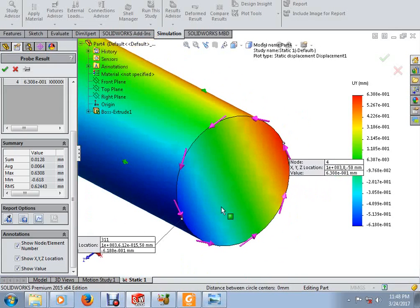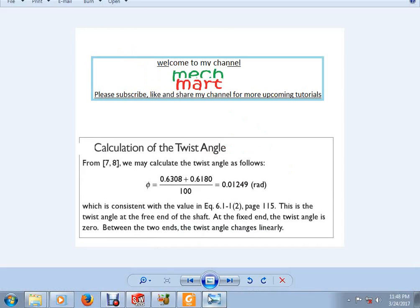So, neglect the minus symbols, 0.063, 0.068, just add these both displacements at extremes and divide by 100, you can calculate the twist angle that is 0.01249.